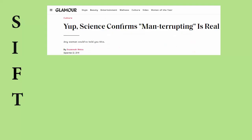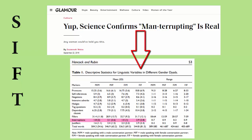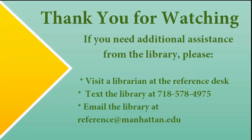So by using this SIFT method, you took an article that may have made you report erroneous information in your paper if you'd just taken it at face value, and used it to find a more reliable source that gives you more nuanced information, and it only took you a few minutes. Thank you for watching, and please feel free to contact us if you're having trouble telling if a source is reliable or how to trace back a claim to its original context.